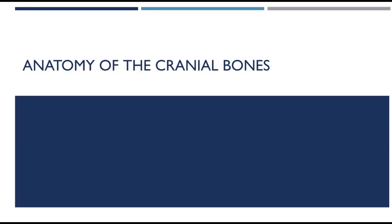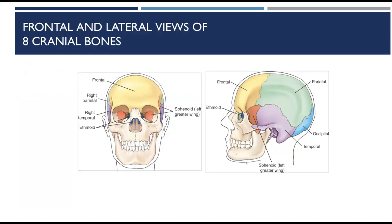Welcome to the start of head work. In this lecture we are going to be reviewing the anatomy of the cranial bones. The skull is divided into two parts: we have eight cranial bones and 14 facial bones. The cranial bones are divided into two parts — the calvarium, which is the skull cap consisting of the frontal, right and left parietal bones, and the occipital bone; and the floor of the cranium, consisting of the right and left temporals, the sphenoid, and the ethmoid bone.